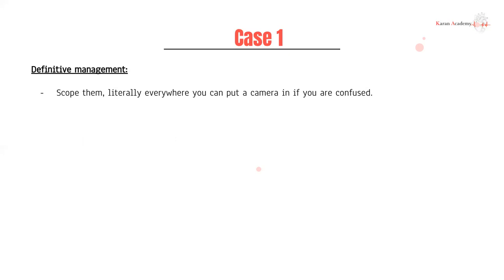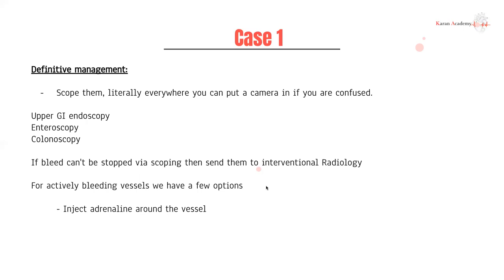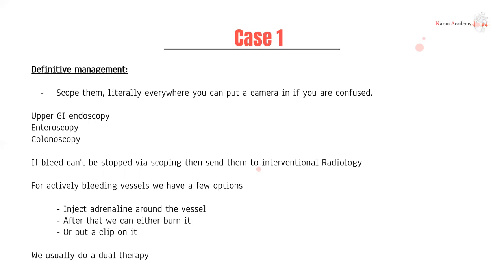For definitive management, scope them — put a camera in if you're confused. This means an upper GI endoscopy, gastroscopy, colonoscopy, whatever is appropriate. This is usually done in a procedural setting with a gastroenterologist, upper GI surgeon, or interventional radiologist. The advantage of upper GI imaging is that you can also perform procedural intervention in the same setting. If you see a bleeding vessel, you can inject adrenaline around it — adrenaline is a vasoconstrictor that helps close up vessels and reduce bleeding. After that, you can either cauterize it or put a clip around it. Often we do dual therapy — two of the three options.